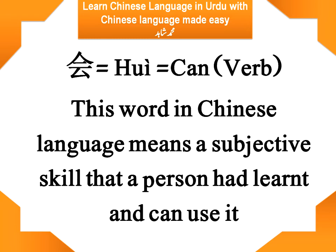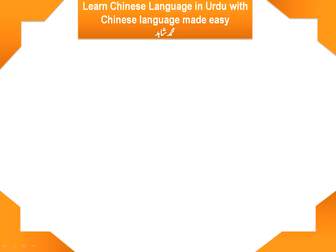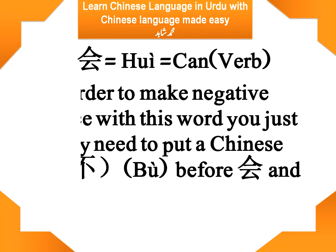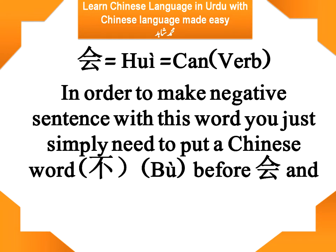If someone has a set of skills, we use 会. But if a person is asked about a skill and he wants to reply that no, he does not have that skill, he needs to deny it. To make a negative sentence, you just need to put the word 不 (bù/poo) before 会. 不会 means 'cannot.'